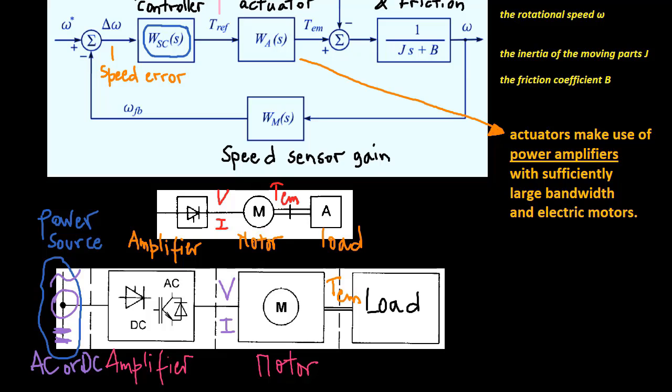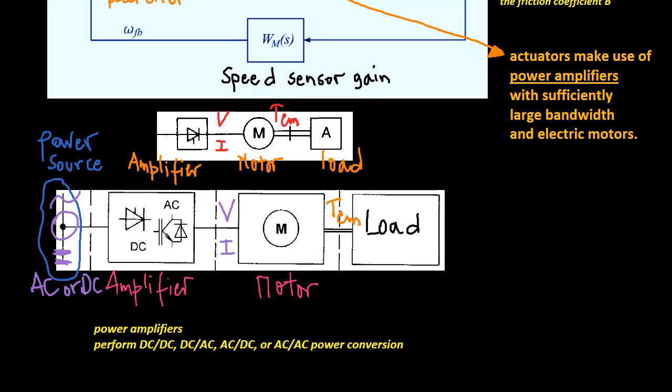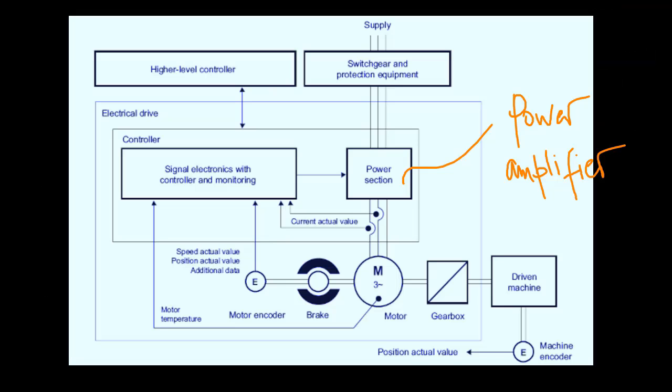Given the potential use of both AC and DC motors, power amplifiers may be requested to perform DC to DC, DC to AC, AC to DC, or AC to AC power conversion. The power amplifier is connected to the electric motor, and the combination of the two is referred to as an electric drive.